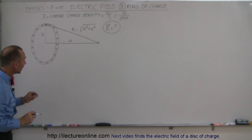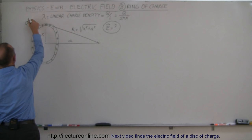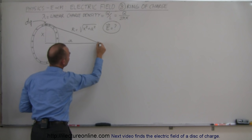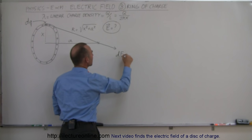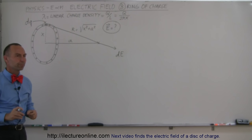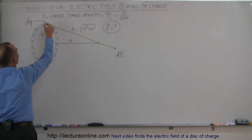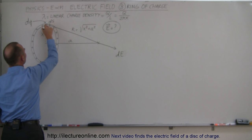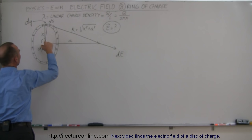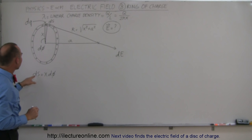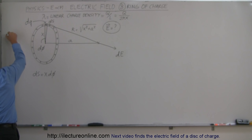If I take a small little segment on the ring, that segment will contain a certain amount of dq on it, and we'll have an electric field in this direction caused by that small dq — we'll call it dE. This small length on the circle we can call ds, and it subtends a small angle dφ. Therefore ds equals the radius x times dφ. We can relate ds to dq as follows: dq equals the linear charge density λ times the small length ds, which is x dφ.